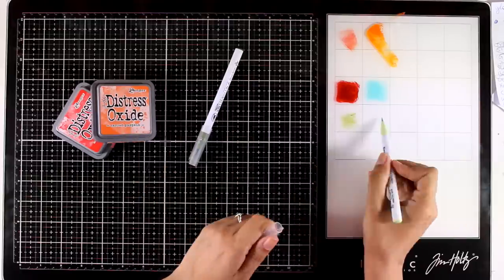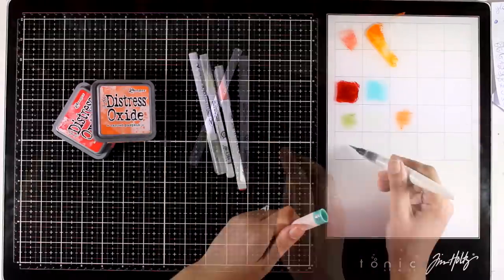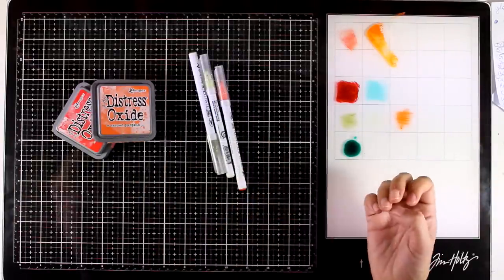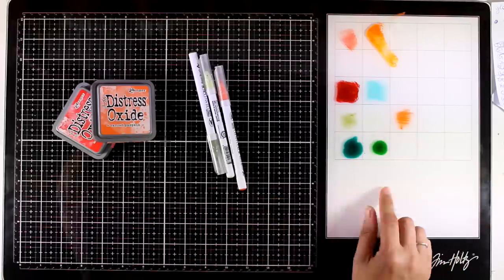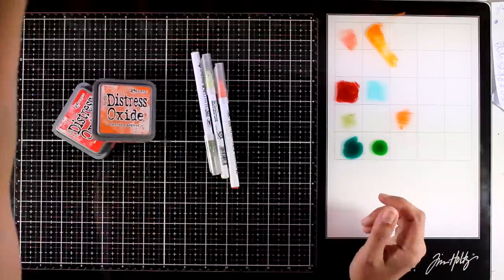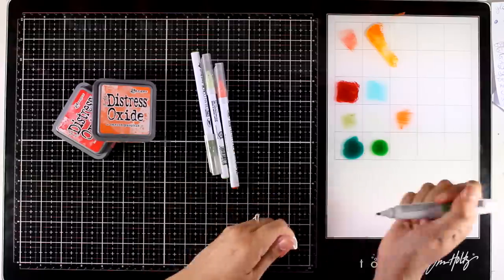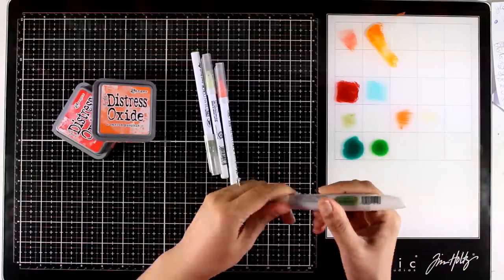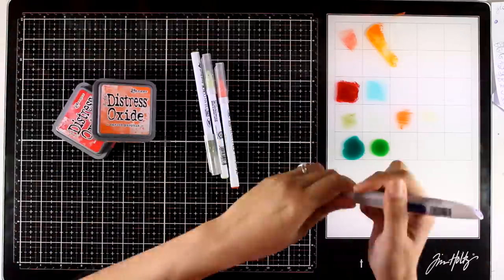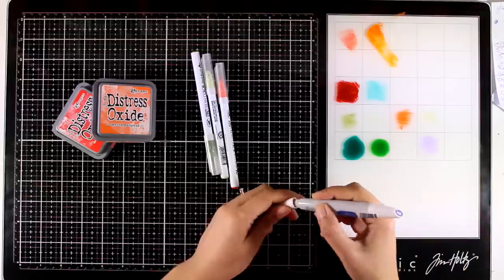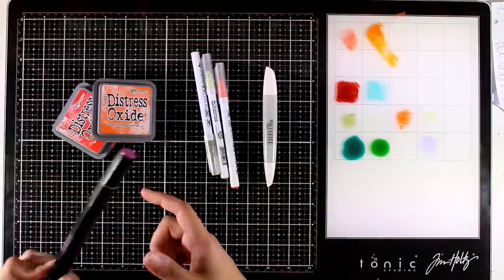You can use distress oxide or a dye ink, or here I'm using my Zig clean markers. You can even use watercolor pens to create your palette. Nothing is going to quickly dry since this is glass. It is not going to absorb your medium and it will stay wet so that you have plenty of time to work with it.